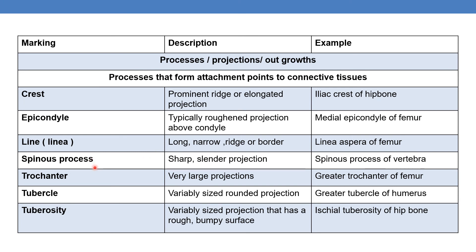Next is spinous process — a sharp, slender projection. An example is the spinous process of a vertebra. Next is trochanter — a very large projection. An example is the greater trochanter of the femur.